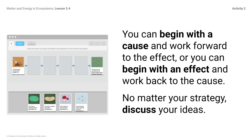If I choose to start with the first cause, I might say to my partner: the Econauts buried dead matter — what did that cause? We could get started by discussing the role that dead matter plays in an ecosystem. My next step might be to rule out cards that don't have anything to do with burying dead matter. For instance, I don't think burying dead matter has anything to do with the decrease in photosynthesis, so I can rule that card out.